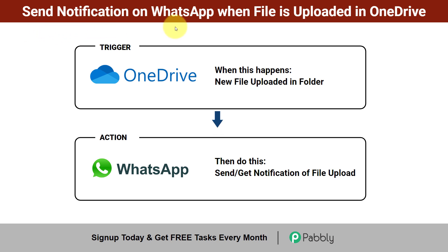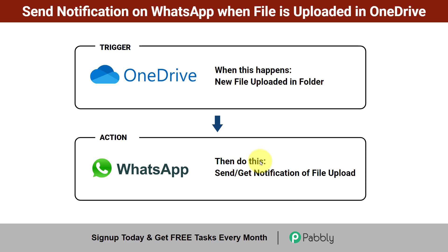In this video I will show you how to send a notification on WhatsApp when a file is uploaded in OneDrive automatically. Assume that you are creating some file — a design or maybe a blog — and after successful creation you always have to upload that file into OneDrive, and then manually text your team on a specific WhatsApp number saying you have uploaded the file and they can check or review it.